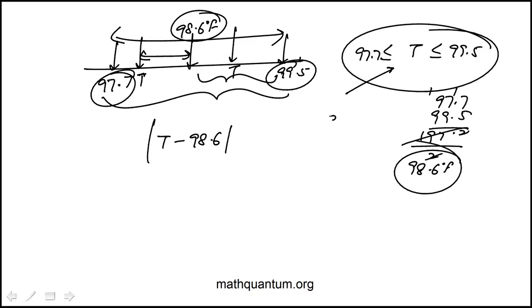Now what's the distance between those two? 99.5 minus 97.7, that's 1.8. Half of that is 0.9, which means that the distance between T and the center will always be less than or equal to 0.9.